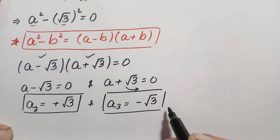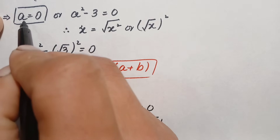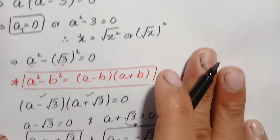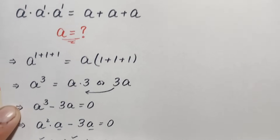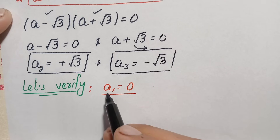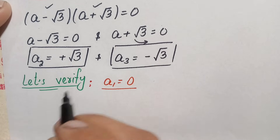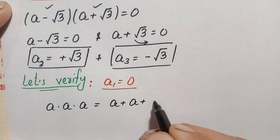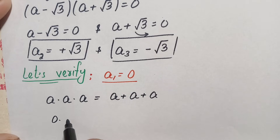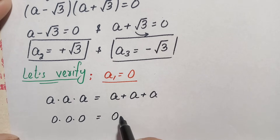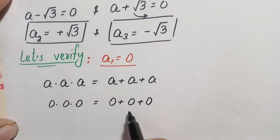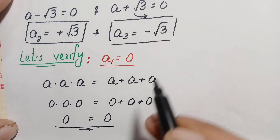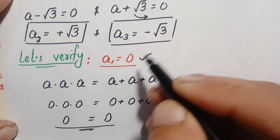Now we will verify all three solutions: a₁ = 0, a₂ = √3, and a₃ = -√3. To verify a₁ = 0, we rewrite the original problem: a × a × a = a + a + a. Substituting zero gives: 0 × 0 × 0 = 0 + 0 + 0, which simplifies to 0 = 0. Both sides are equal, so a₁ = 0 is correct.